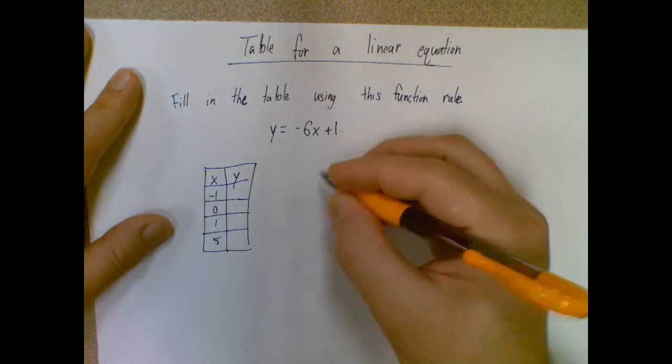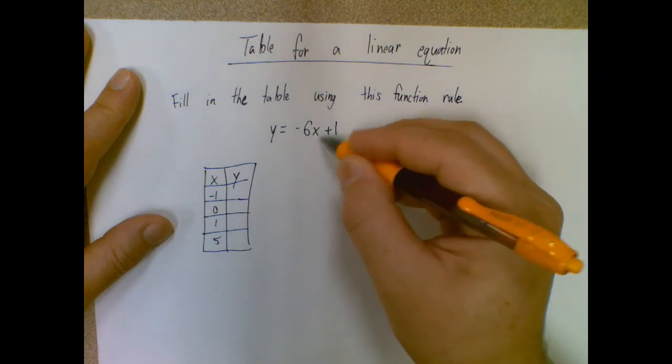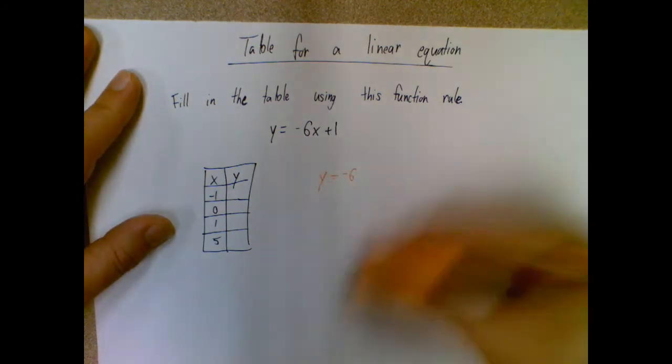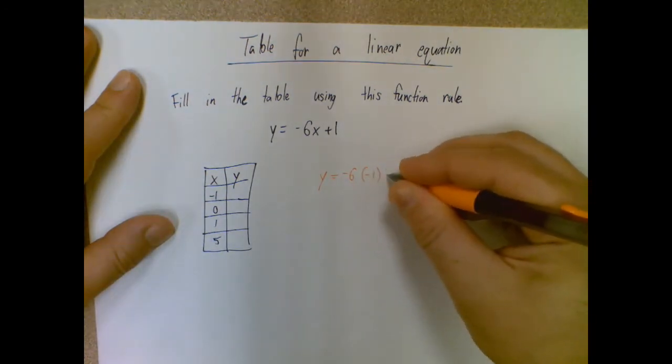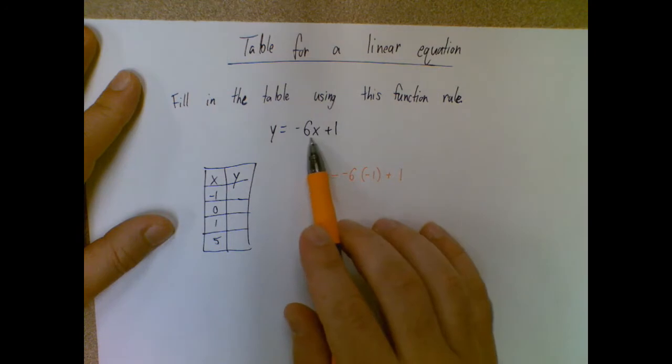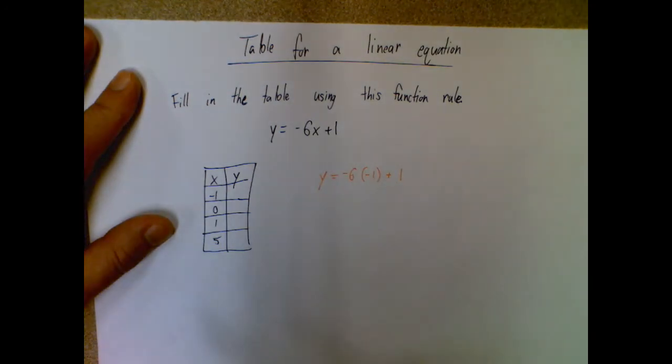So if I look at this first one, I'm going to plug in negative one, and it's under the x column. So I'm going to plug it in for x. So it's going to be y equals negative six. I am plugging in a value, so I want to put that value in parentheses to make sure I don't do anything with the negative signs by mistake. So instead of y equals negative six times x plus one, it's y equals negative six times negative one plus one.